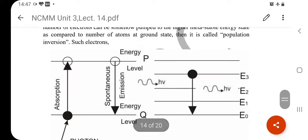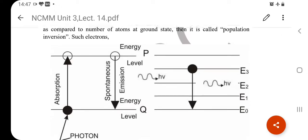When a photon particle strikes an electron, it gives that electron energy. Due to that energy, the electron moves to a higher level. When it is at the upper level, after a short time it feels unsaturated. So it comes back down to the lower level, releasing that energy in the form of a photon. This process is called absorption and spontaneous emission.